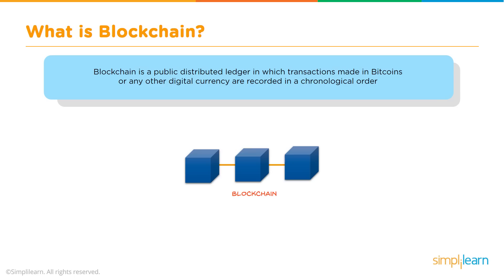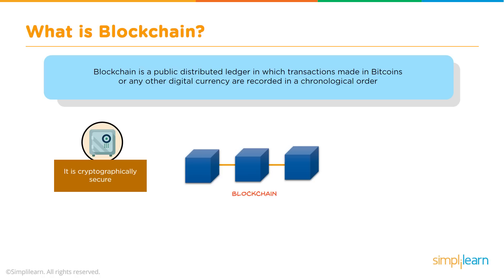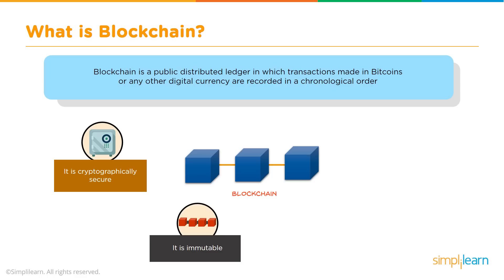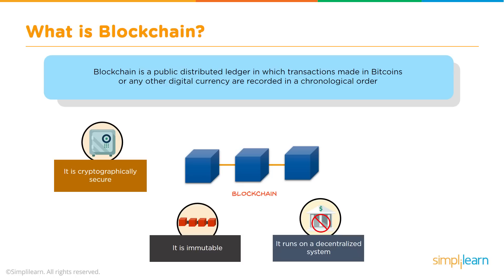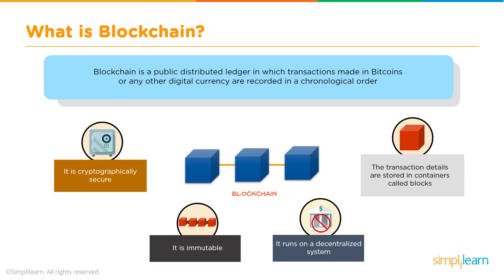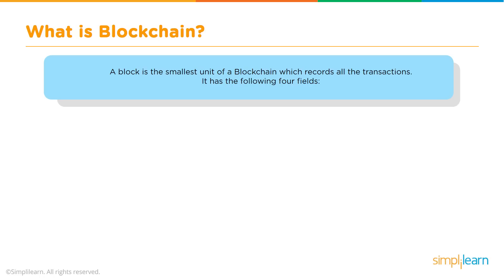Now, what is blockchain? Bitcoin runs on the underlying technology of blockchain. Blockchain is a public distributed ledger in which transactions made in Bitcoins or any other digital currency are recorded in chronological order. Key features: it is cryptographically secure, signed using your private key and shared with the public key; it is immutable — any transaction added to the blockchain cannot be modified or altered; it is run by a decentralized system with no centralized authority; and transactions are stored in containers called blocks.